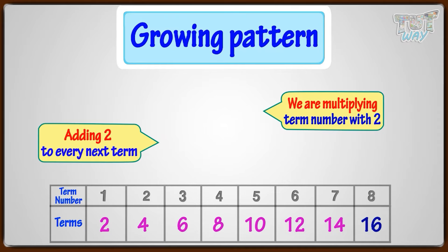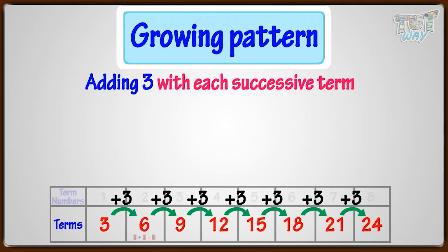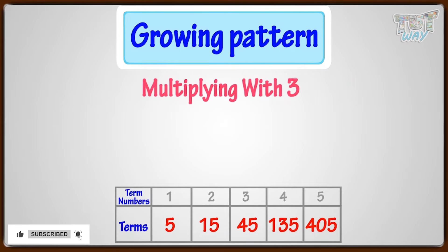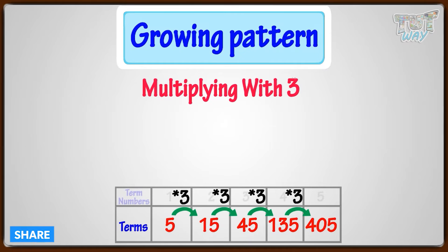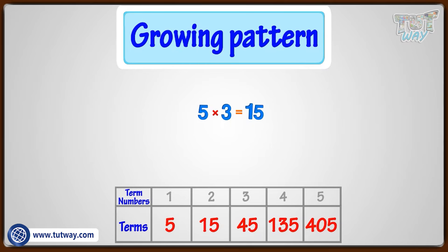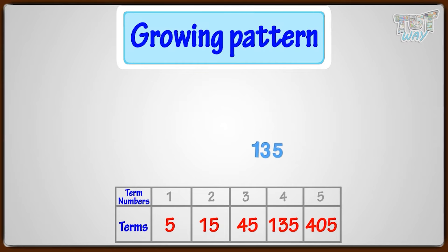Now have a look at more examples of growing patterns. This is an example of a growing pattern where we are adding 3 with each successive term. Here is another growing pattern where we are multiplying by 3. The first term is 5, the 2nd term is the 1st term multiplied by 3. The next term is 15 multiplied by 3, then 45 multiplied by 3, and then 135 multiplied by 3.